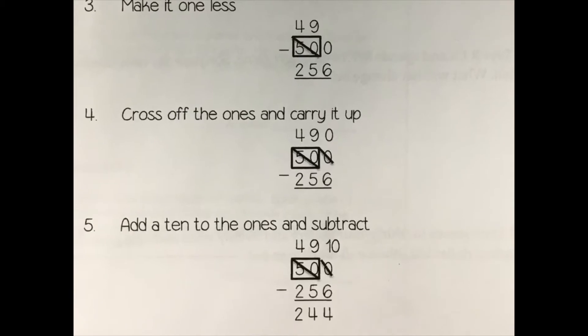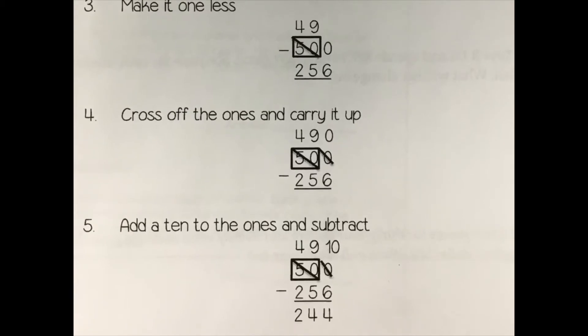Then you are going to cross off the ones and carry it up, or another way of saying carrying it up is when you cross out this zero, and we're adding 10 that we borrowed from over here. So 0 plus 10 would be 10, which is add a 10 to the ones and subtract.